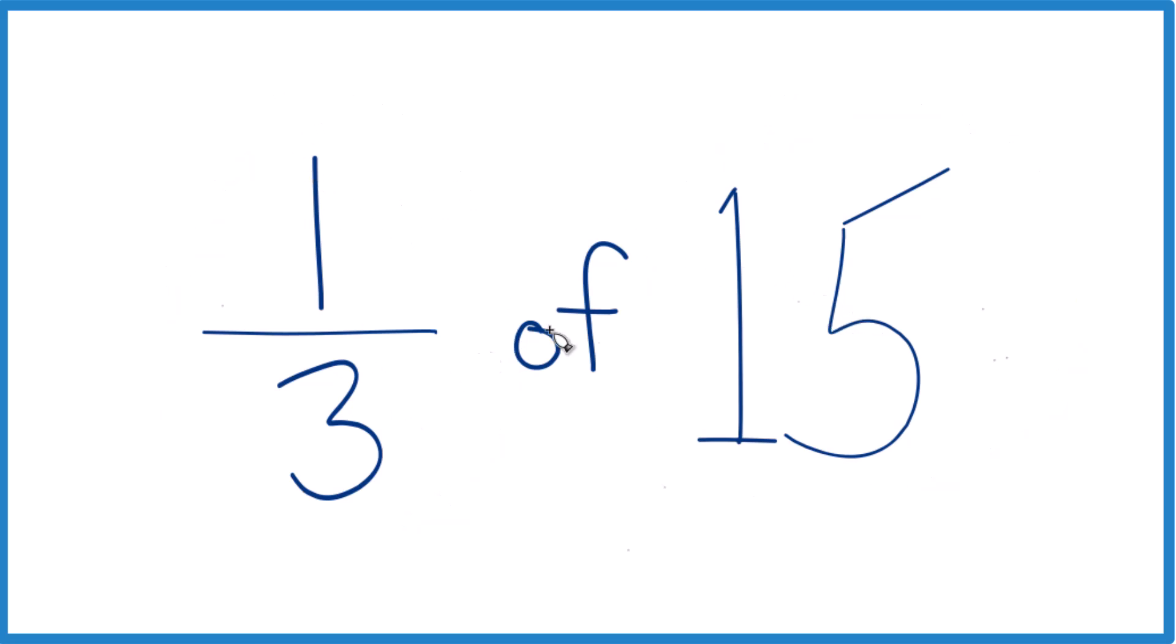So what we're going to do: one-third of 15. Instead of 'of,' let's call this one-third times 15. It's the same thing - one-third of 15, one-third times 15, same thing.